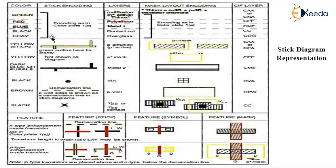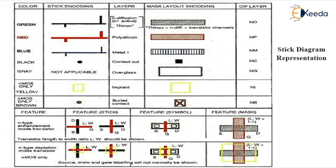To recap the stick-type encodings: green for n-diffusion, red for polysilicon, blue for metal, black for contact cuts, gray for over glass, yellow for implantation. For p-diffusion: the mask layout is similar to n-diffusion, but with large spacings between the cross lines, while n-diffusion uses small spacings.